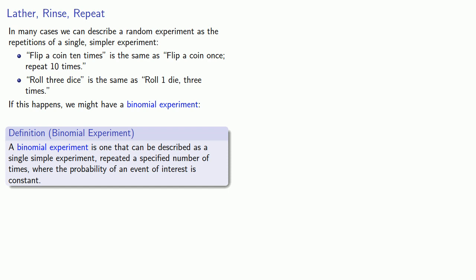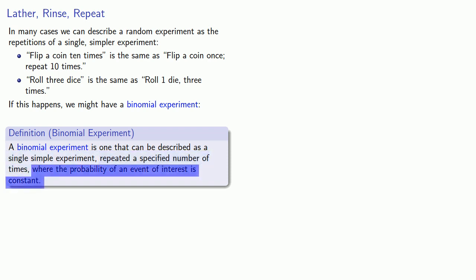More formally, we say that a binomial experiment is one that can be described as a single simple experiment repeated a specified number of times, where the probability of an event of interest is constant.